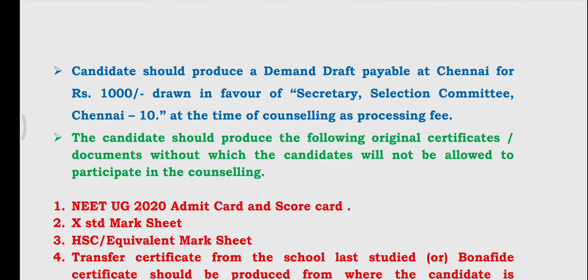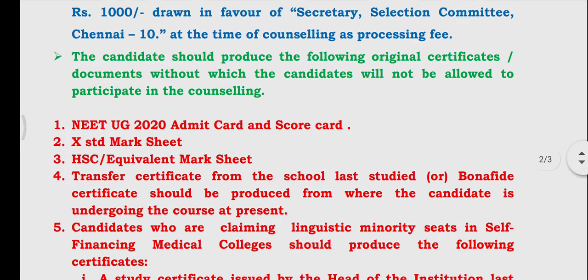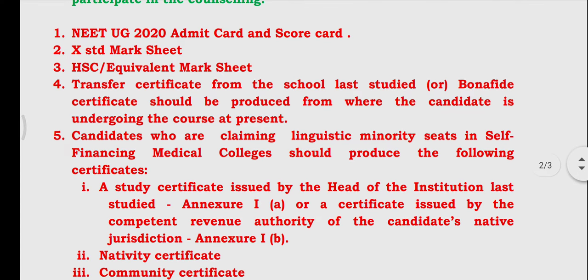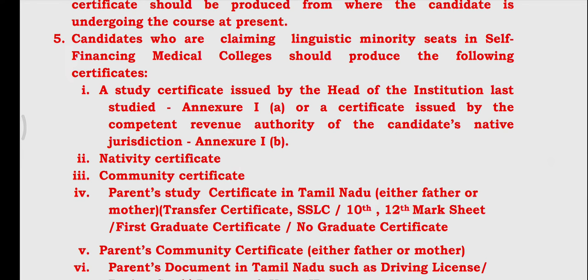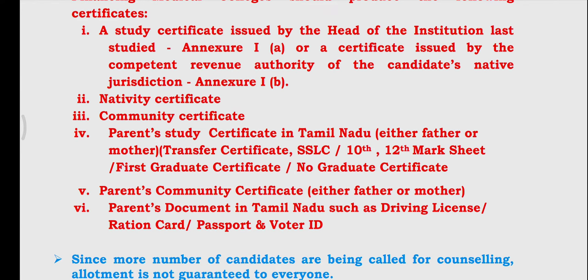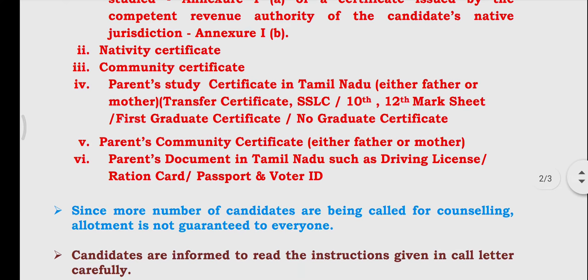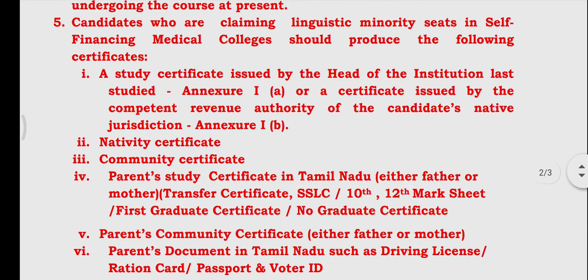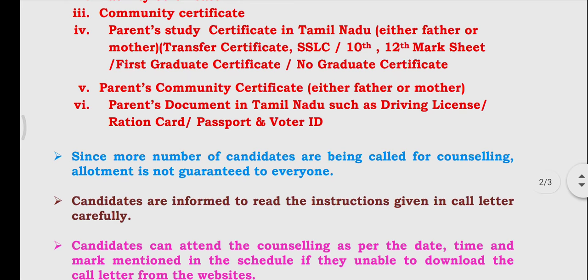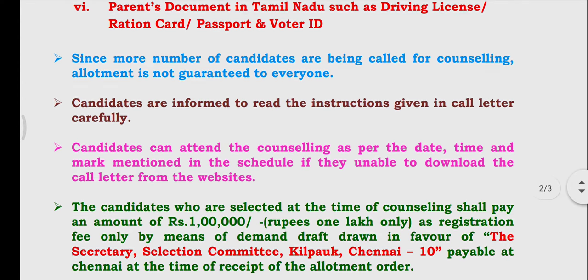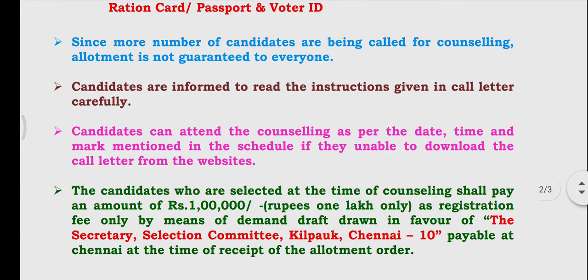Required documents include: UG Score Card, Admit Card, 10th Mark Sheet, 12th Mark Sheet, 11th Mark Sheet. You can click on the Category of Linguistic Declarations, Study Certificate, and select the document for the ID Card. You can click on the Registration Fees.